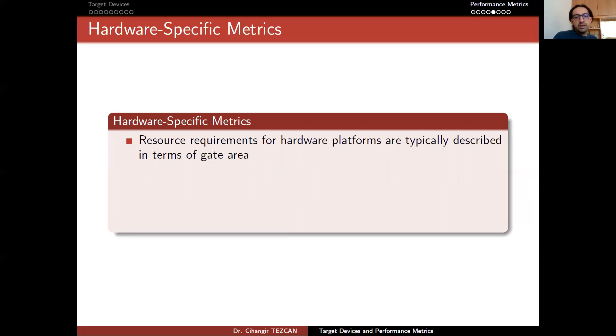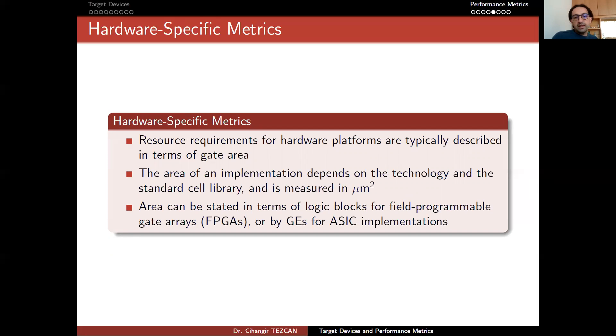Let's focus on hardware-specific metrics. Resource requirements for hardware platforms are typically described in terms of gate area. The area of an implementation depends on the technology and the standard cell library, and it's measured in nanometer squares. Area can be stated in terms of logic blocks for FPGAs or gate equivalents for ASIC implementations. It's important to remind that the number of gate equivalents you're going to calculate or measure depends on the technology you're going to use, not only on the algorithm itself.